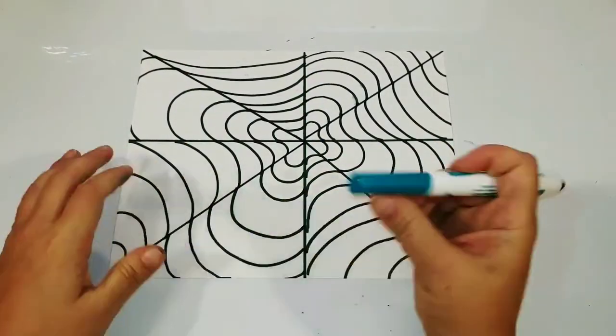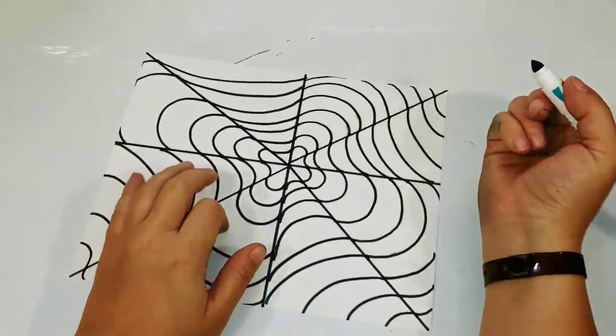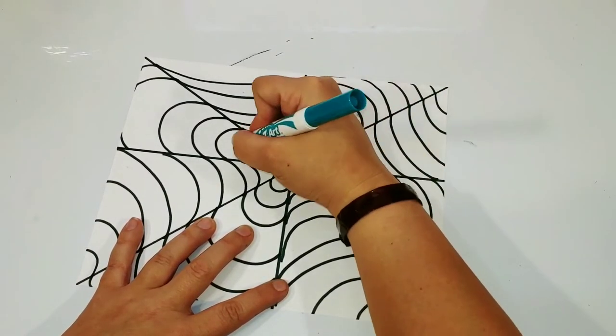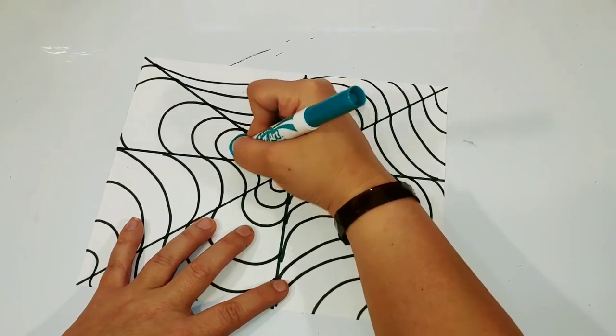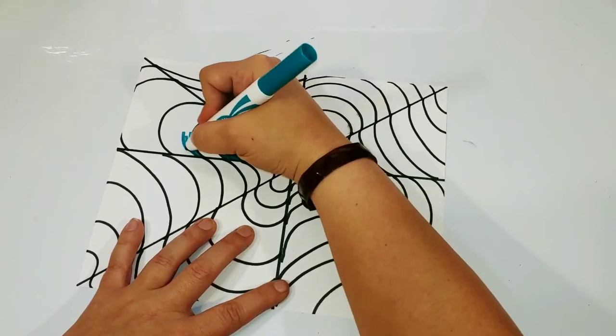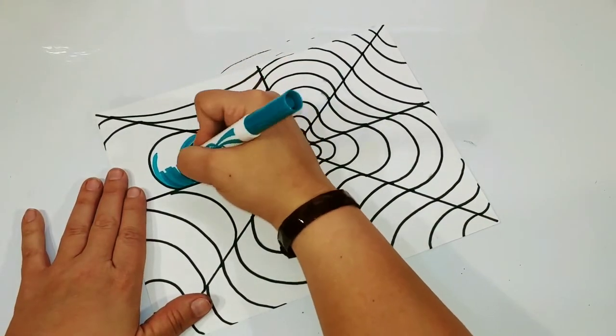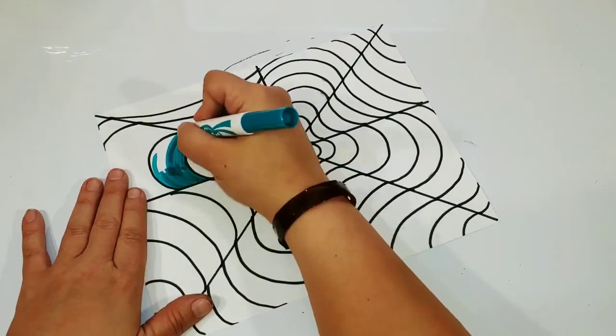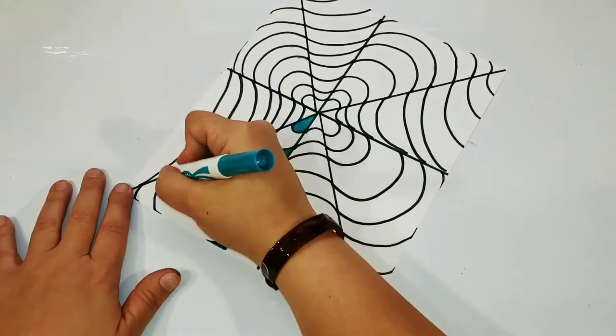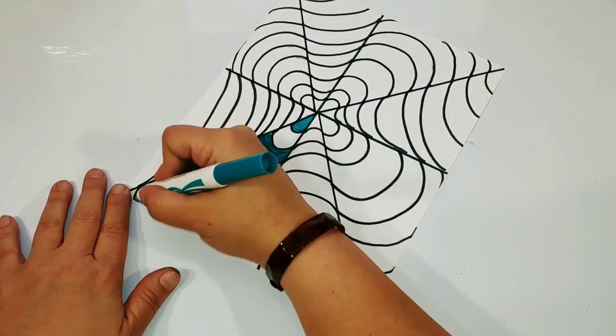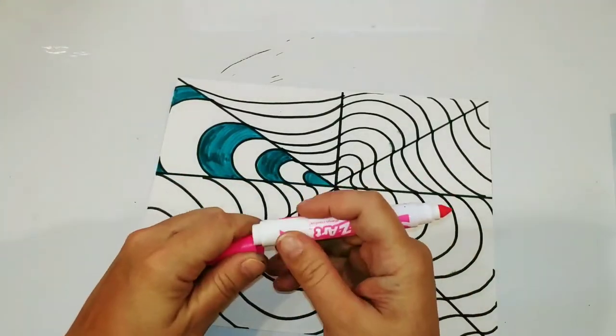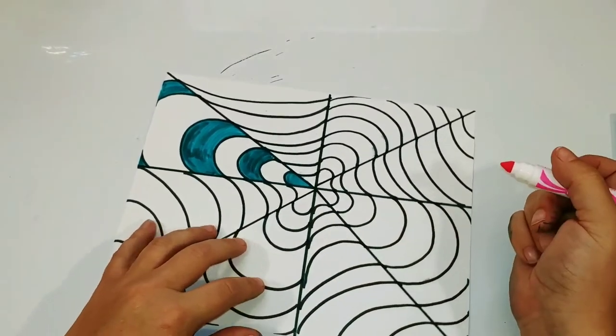So now we're going to get into coloring our optical illusion. We're going to keep this nice and simple and choose two colors. I'm going to start with this teal color. You want to make sure you start in the middle, closest to our cross section, and you're going to color and then skip before you color the next section. So we want to have a white band or a white space in between our colors.